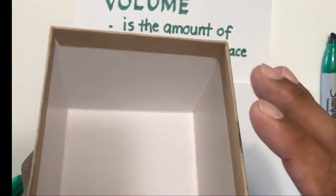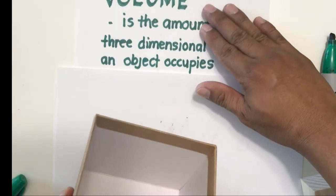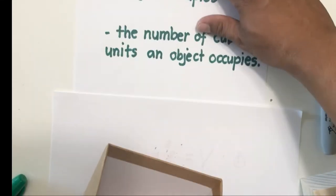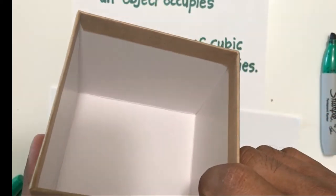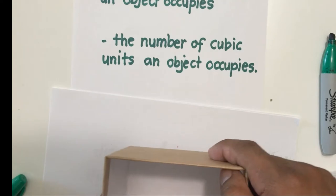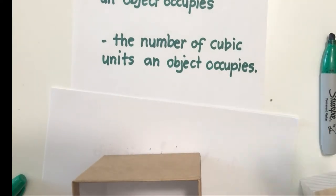But how are we going to do that? The answer is we are going to count the number of cubic units this object occupies. And that brings us now to the concept of cubic units.